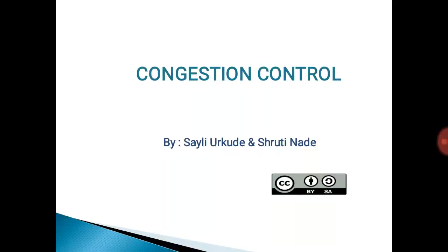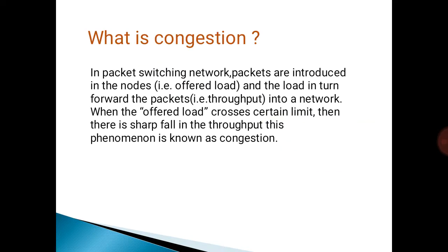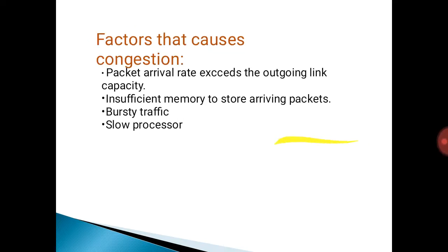In this video we are going to learn what is congestion control. In a packet switching network, packets are introduced in the nodes and nodes in turn forward the packets into the network. When the offered load crosses a certain limit, there is a sharp fall in the throughput. This phenomenon is known as congestion. Factors that cause congestion include: packet arrival rate exceeding the outgoing link capacity, and insufficient memory to store arriving packets.